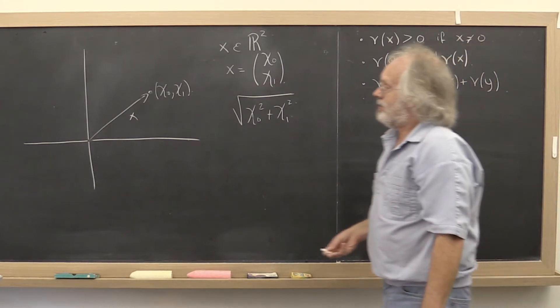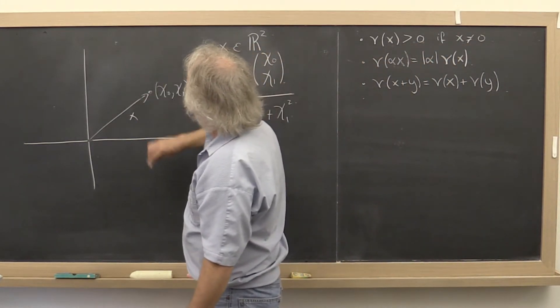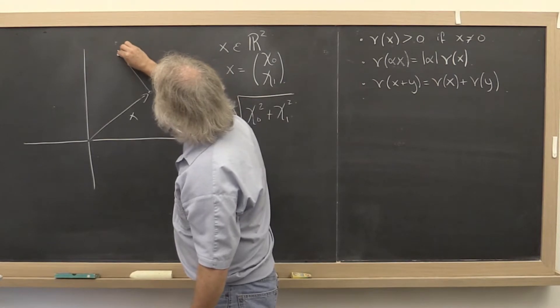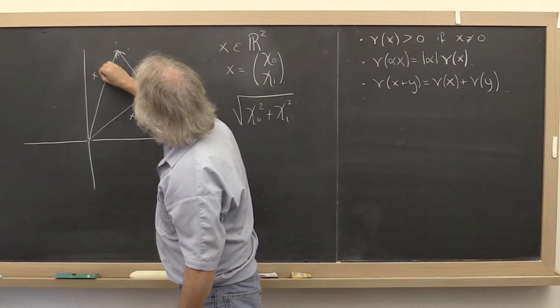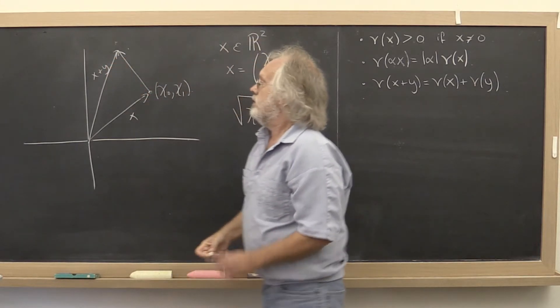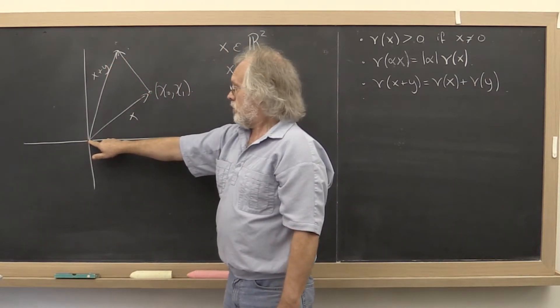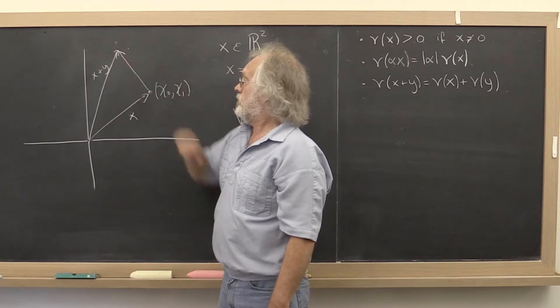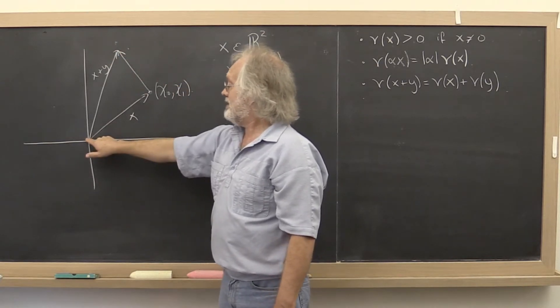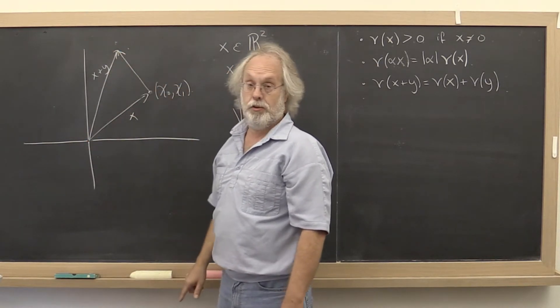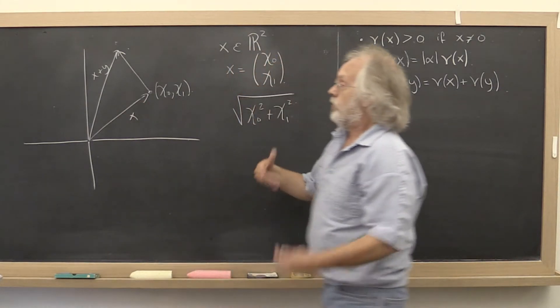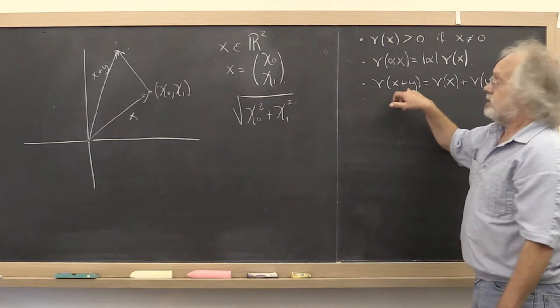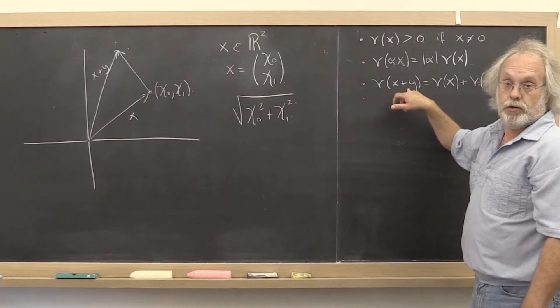And finally, we know that if we have a vector x and then we have a vector y and we look at the vector x plus y, then the shortest distance between two points is the direct line. And therefore, Euclidean distance satisfies the triangle inequality.